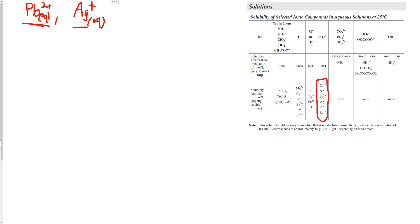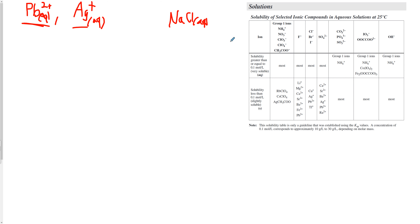What about NaCl, sodium chloride? Looking at the chloride column, both silver and lead are insoluble — so if we add sodium chloride, both ions will precipitate simultaneously. That's not what we want. We need to do two reactions that separate only one ion each time.